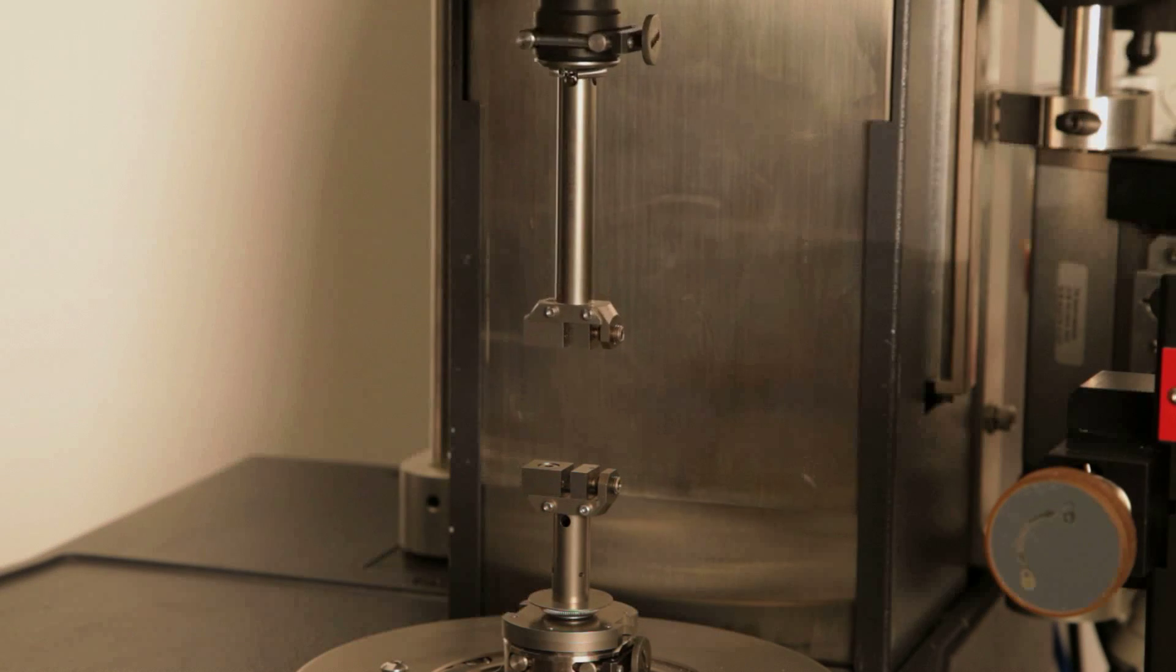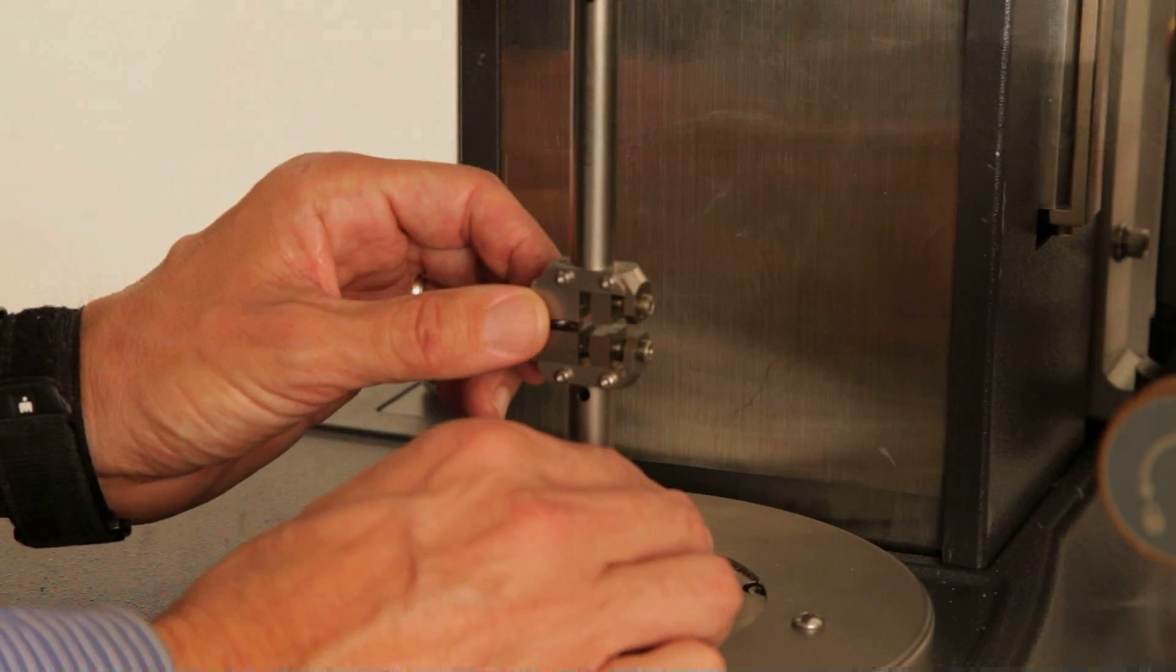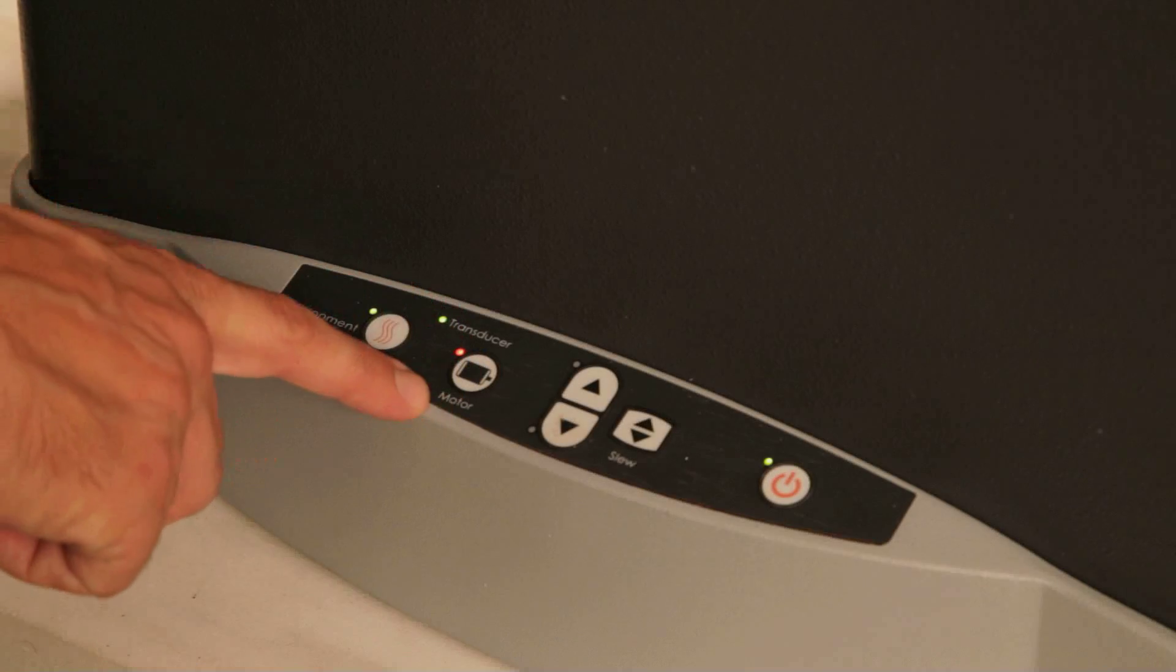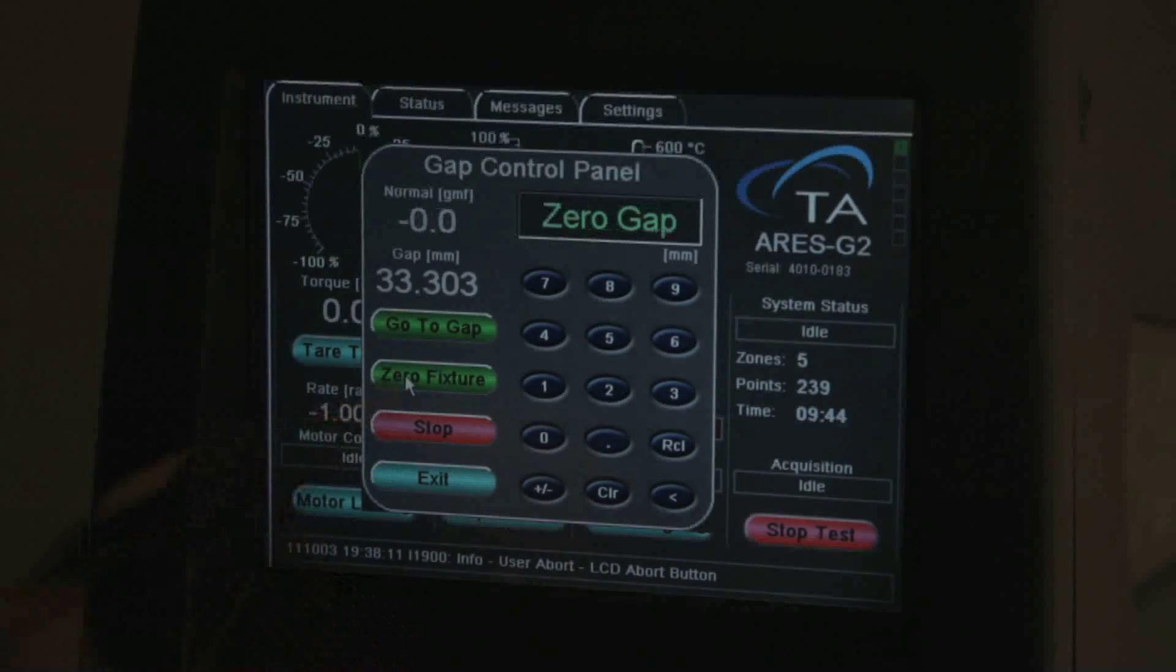Now, bring the upper tool down to about one millimeter from the lower tool. Align the tools using the motor on-off switch on the lower touchpad, and then choose zero gap from the touch screen.